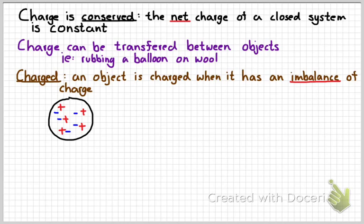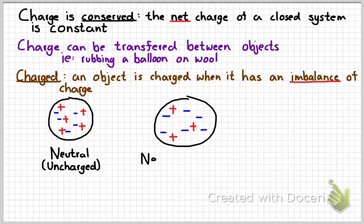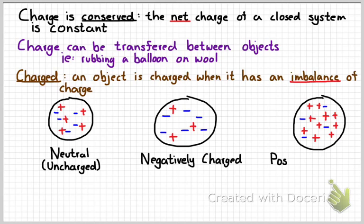A neutral object would look like this. Same number of positive and negative charges. This object would be negatively charged. A positively charged object would have more positive charges than negative. Not all objects are charged. In fact, most objects are neutral. Charged means that we have an imbalance. More of one than the other.